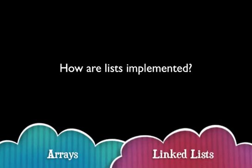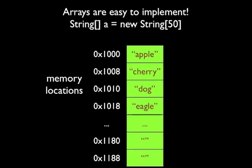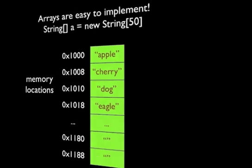So how are lists implemented in computers? You can use either arrays or linked lists. Arrays are easy to implement — you allocate a block of memory and get it to behave like a list. As you can see in the diagram, this is an array of 50 strings stored in contiguous memory locations. So why have linked lists at all? Because simple arrays have two major disadvantages.